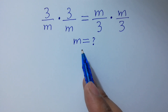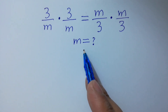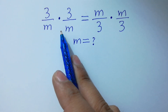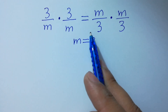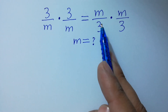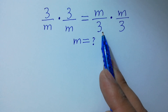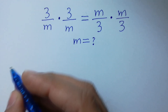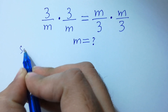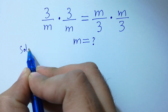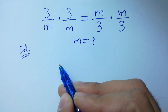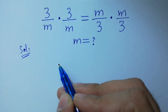Hello friends. Find the value of m if (3/m) × (3/m) = (m/3) × (m/3). Let's have a solution. This is a very easy question.